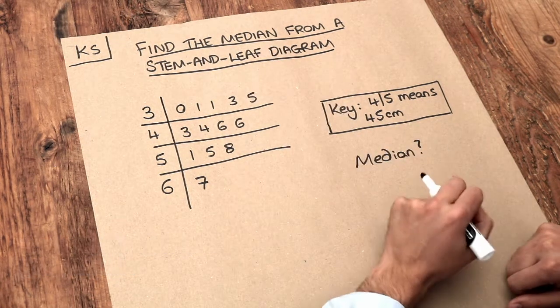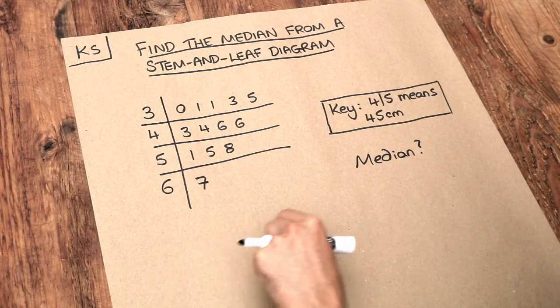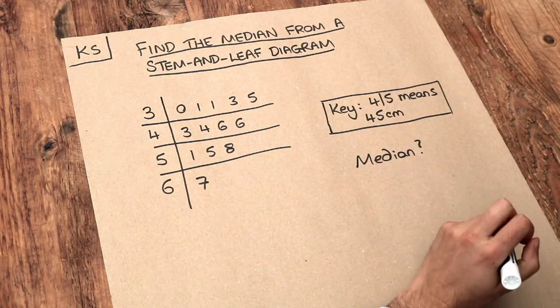Now do you remember that the median was a type of average which means the middle value. So that means if we were to order all our values from smallest to largest, we would take the middle one to be the median.